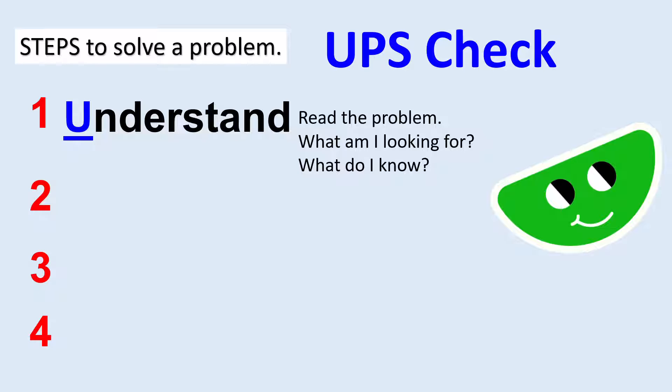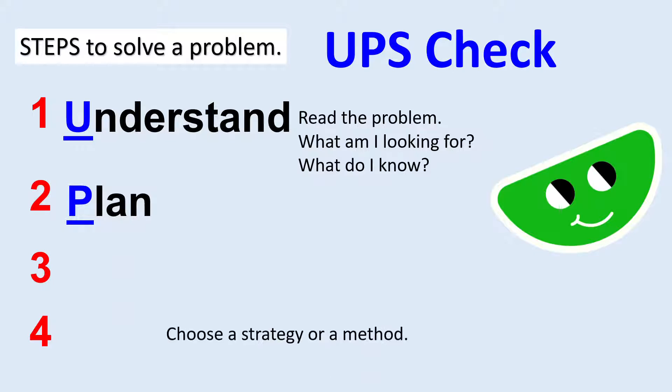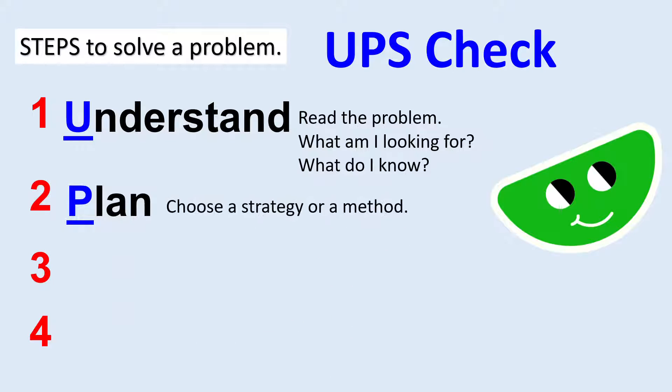The second step is letter P — Plan. You choose a strategy or method to use to solve the problem. You can draw a model. The third step is S — Solve. Carry out the plan.